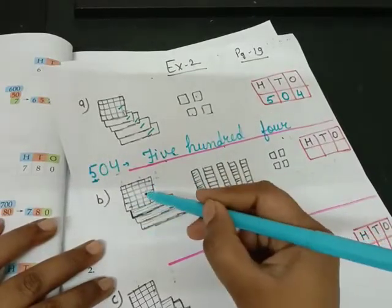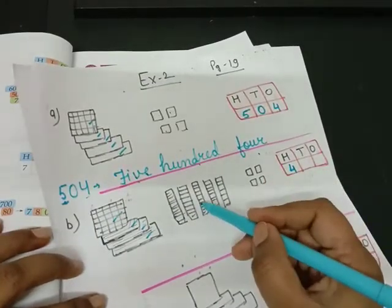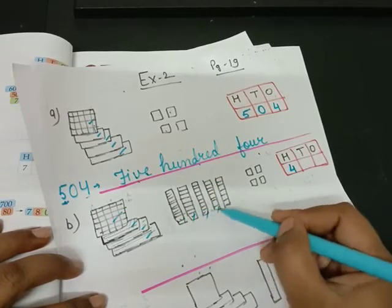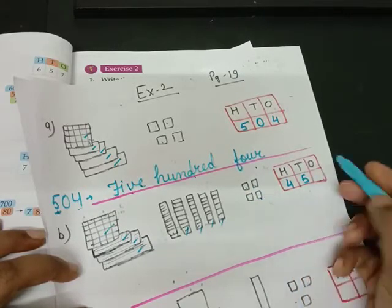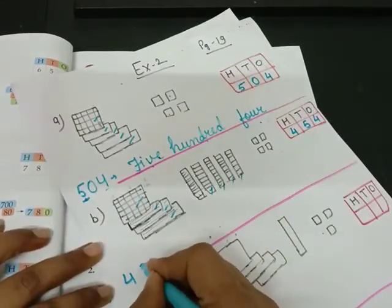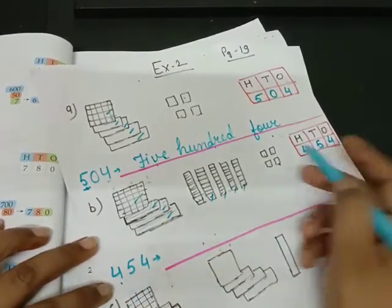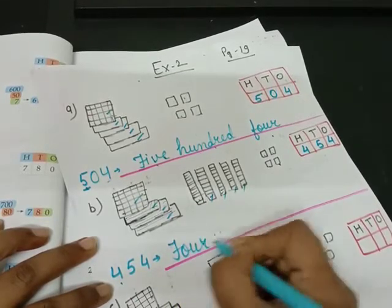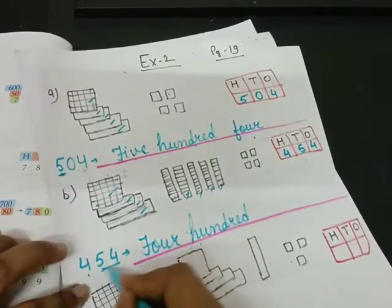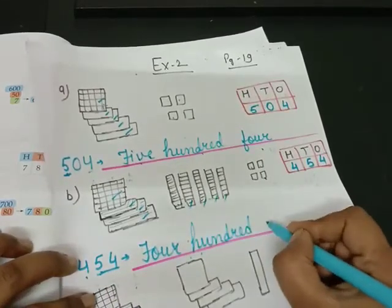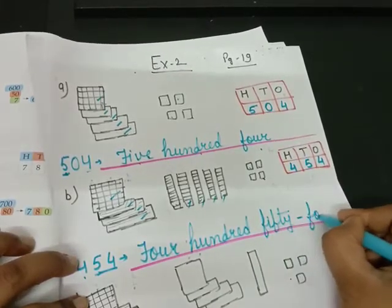Again count. How many hundreds are there? One, two, three, four. How many tens are there? One, two, three, four, five. And how many ones? Four. So what can we write? Four hundred — F-O-U-R — four hundred fifty-four. F-I-F-T-Y, F-O-U-R.